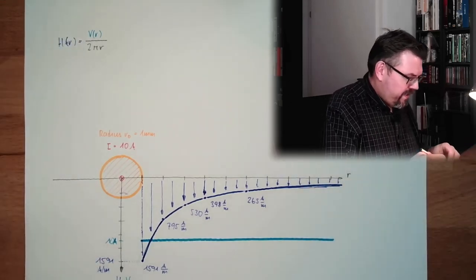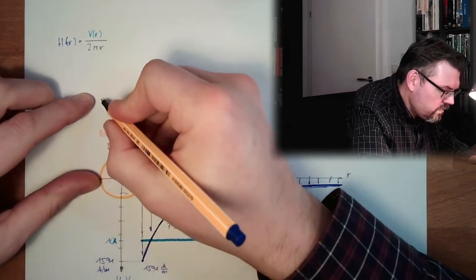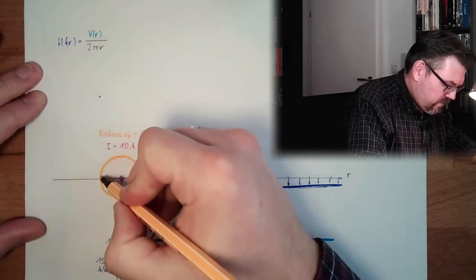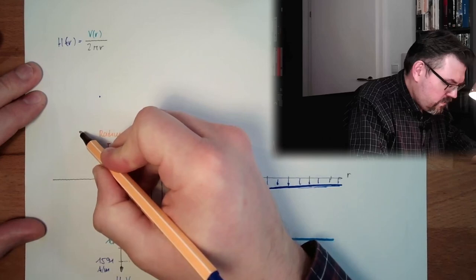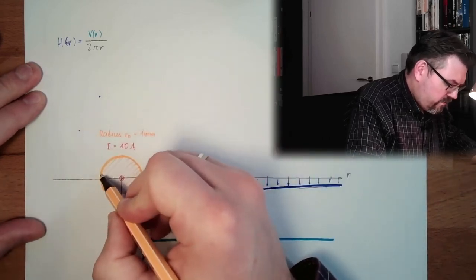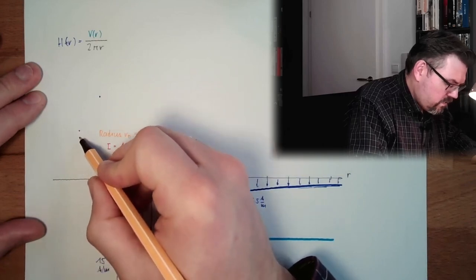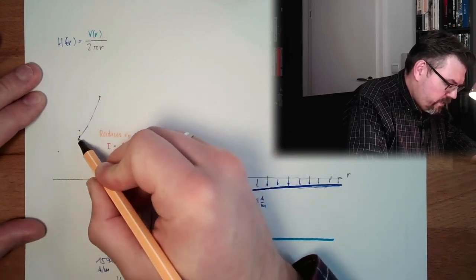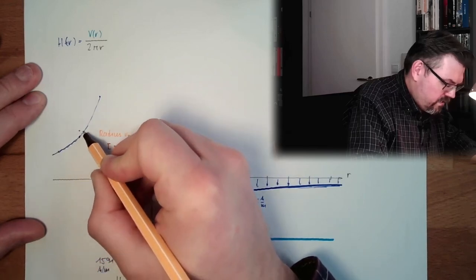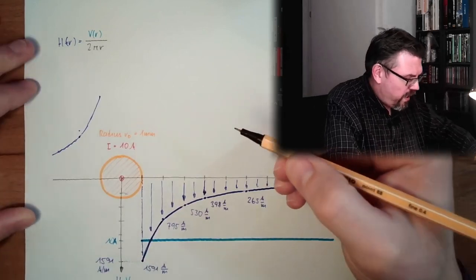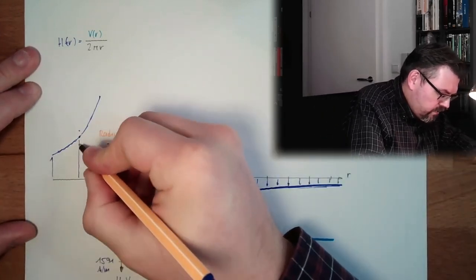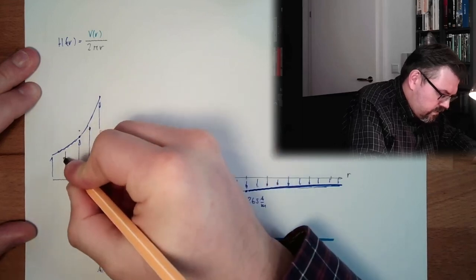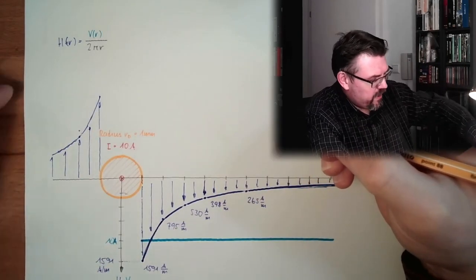How would it look on the other side? Well, exactly the same — dropping here to half at 2R. At this side we are like a mirror, because it's turned around. Here at this side we're going up. It's exactly the same, because it's rotary.